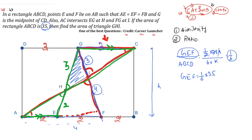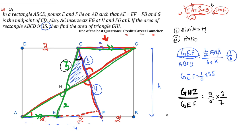Now we apply the sine formula. To find GHI out of GEF: using the sine formula, the ratio is (3 out of total 5) times (3 out of total 7). So GHI out of GEF equals 9/35. Therefore GHI equals (9/35) times (1/6) times 35.